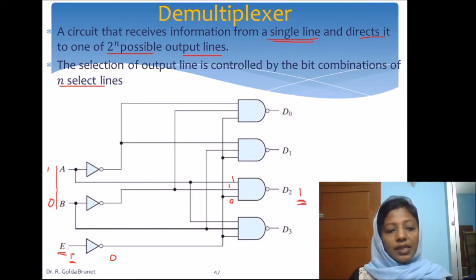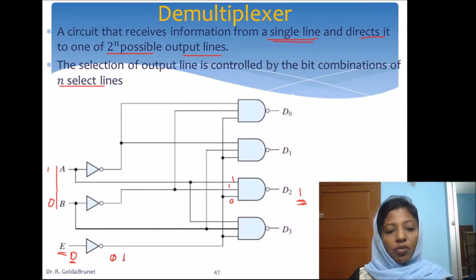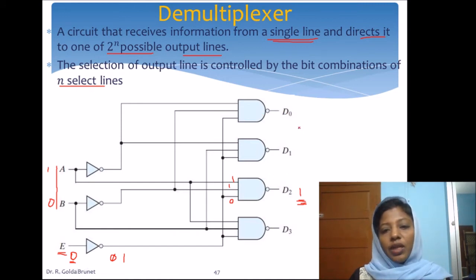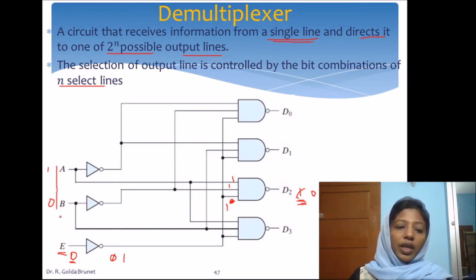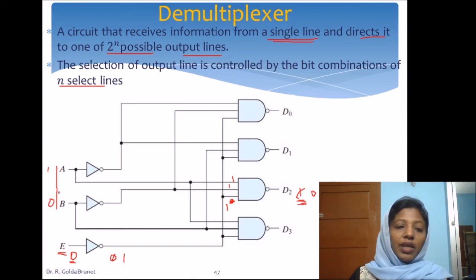Let us consider the reverse case. Suppose I want to pass the information 0 to the output line D2. In that case, E-dash will be 1. I want to pass 0 to D2 since the select line is 1, 0. All other gates except D2 will output 1, and only here all inputs to the NAND gate are 1, so we get output 0. We have passed the information E to the line D2. This is how the demultiplexer works — the enable input acts as the information to pass, and the input lines of the decoder act as the select lines.